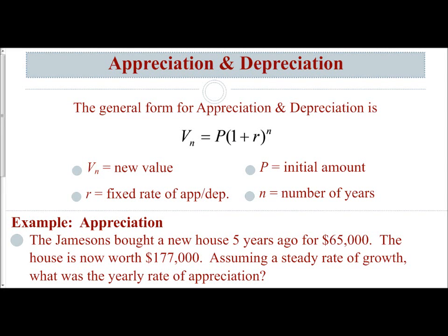We're going to continue our examination of applying base E and exponential functions with looking at appreciation and depreciation. We have V sub n equals P times the quantity 1 plus R to the n power. V sub n is your new value, P is the initial value, the initial amount, R is your fixed rate — and rates need to be written as decimals. N is your number of years.